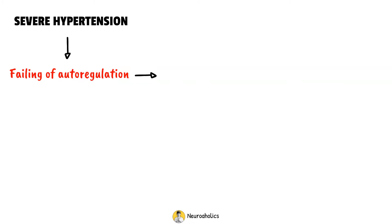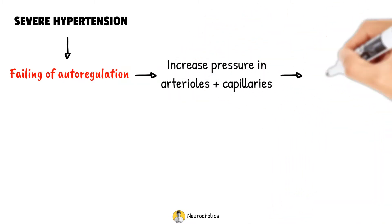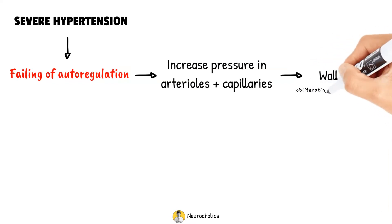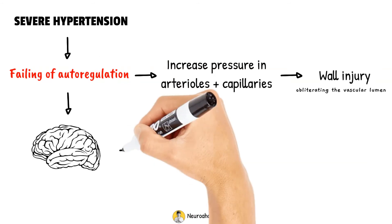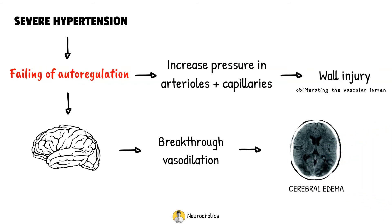The resulting increase in pressure in the arterioles and capillaries causes acute vascular wall injury. When the vascular endothelium is disrupted, plasma components, including fibrinoid material, penetrate the vascular wall, restricting or obliterating the vascular lumen. Within the brain, the failure of autoregulation causes breakthrough vasodilation, which leads to cerebral edema and the clinical presentation of hypertensive encephalopathy.